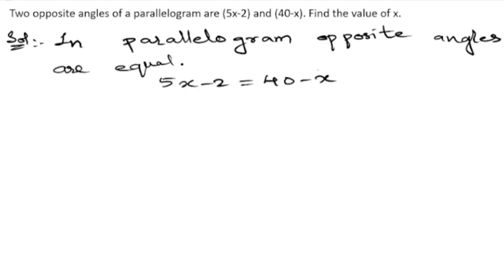So this x comes here and 2 goes to that side. That will be first we will write 5x plus x. Next, 40 plus 2. So 5x plus x is 6x is equal to 40 plus 2 is 42.